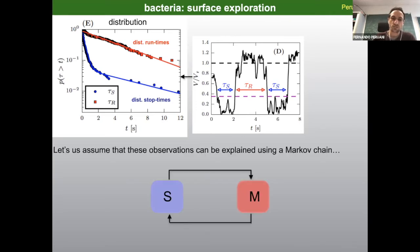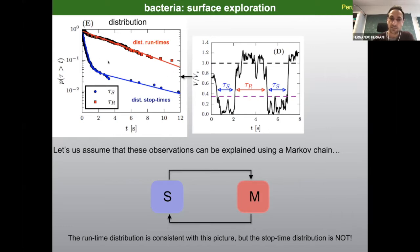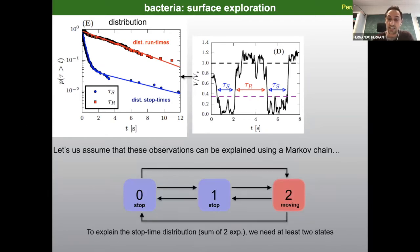Let's suppose we try to describe this observation using a two-state Markov chain — that sounds reasonable since we have the stop state and the moving state with transitions between them. However, if we do that, the problem is that we will get an exponential for the distribution of run times but also an exponential for the distribution of stop times, and we are observing here that it is not exponential.